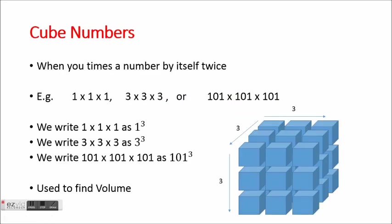Cube numbers are similar, except now we're multiplying the number three times: one times one times one, or three times three times three. So instead of writing a two, we write a three above the number, because we've got three of them multiplied together. This is used to find the volume. We have three rows by three columns, and that three times over. So three times three times three gives you 27, and the unit would be centimetres cubed. That's squared for area, cubed for volume.